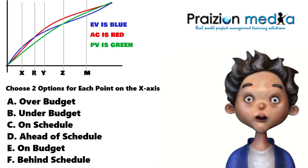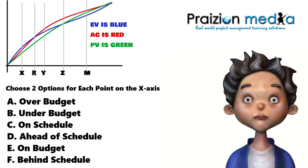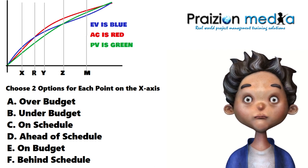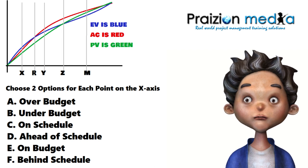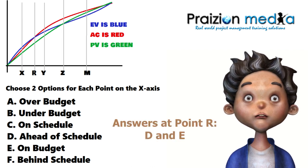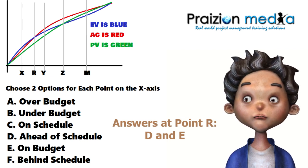Let's go to our next point, point R. At point R, earned value and actual cost are aligned, which means earned value is equal to actual cost. So the CPI is 1 and the cost variance is 0. In terms of the schedule, the earned value is above the planned value line, so that means you're getting more done within the time period. For that reason, we can say at point R, you are on budget and you are ahead of schedule — option D.